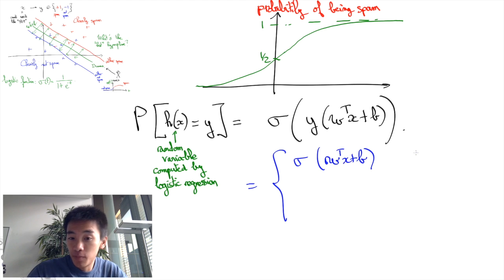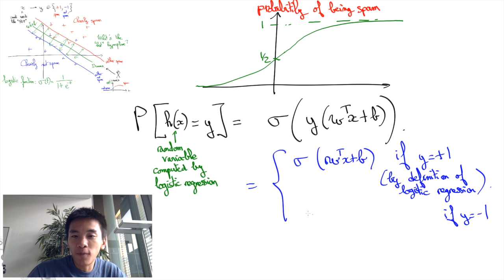Indeed, if y equals plus one, we obtain the defining equation of the probabilistic interpretation of the logistic regression. Otherwise, if y equals minus one, we obtain probability of h of x equals minus one equals 1 minus the probability of h of x equals 1.